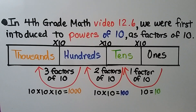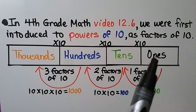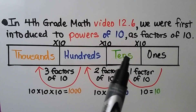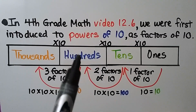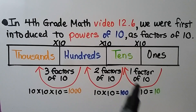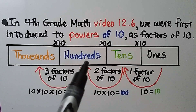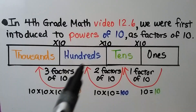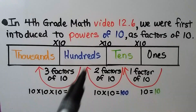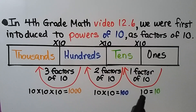In fourth grade math video 12.6, we were first introduced to powers of 10 as factors of 10. Moving from the 1s place to the 10s place is 1 factor of 10, which is 10. Moving from the 10s to the 100s is 2 factors of 10: 10 times 10 equals 100. Moving from the 100s to the 1,000s is 3 factors of 10: 10 times 10 times 10 equals 1,000.